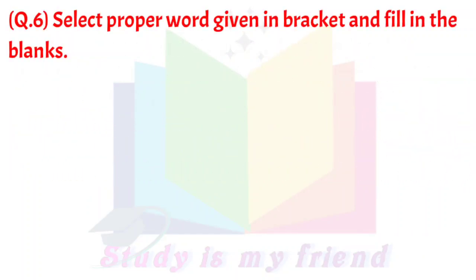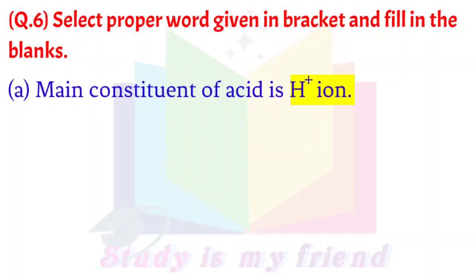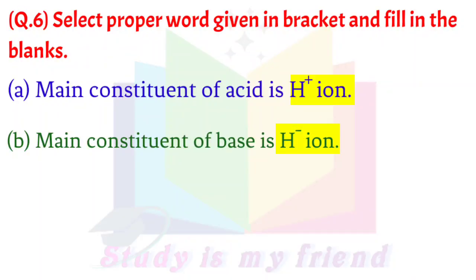Question 6: Select proper word given in brackets and fill in the blanks. A. Main constituent of acid is H+ ion. B. Main constituent of base is OH- ions. C. Tartaric acid is a weak acid.